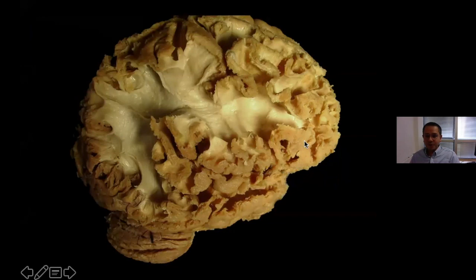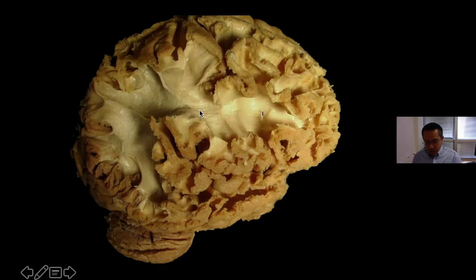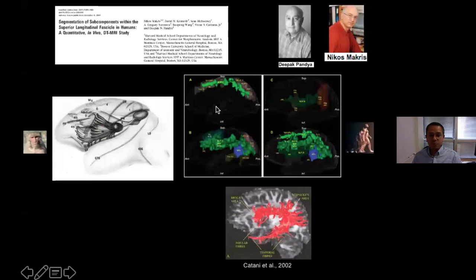To advance inside the centrum semiovale, we have to remove the U-fibers. With this specimen, we rapidly see the presence of very long fibers that are different — horizontally oriented inside the frontal and parietal lobes. This is seen in the most lateral portion of the centrum semiovale, and we know this is part of the superior longitudinal fasciculus that we are beginning to expose. The superior longitudinal fasciculus is a very important element of the white matter and requires detailed understanding — there is a lot of research dedicated to its different parts.